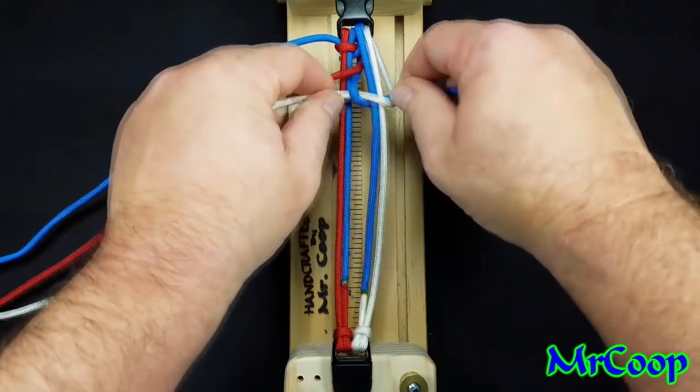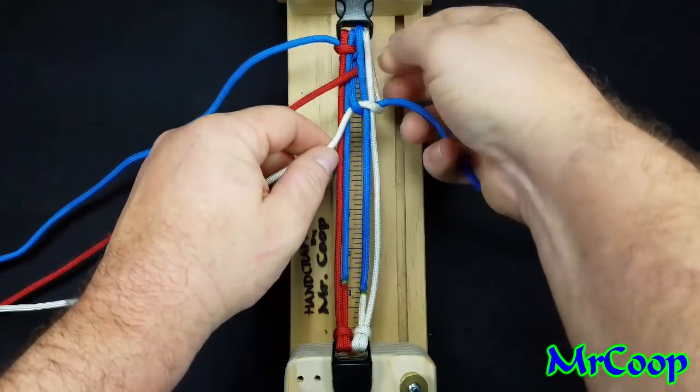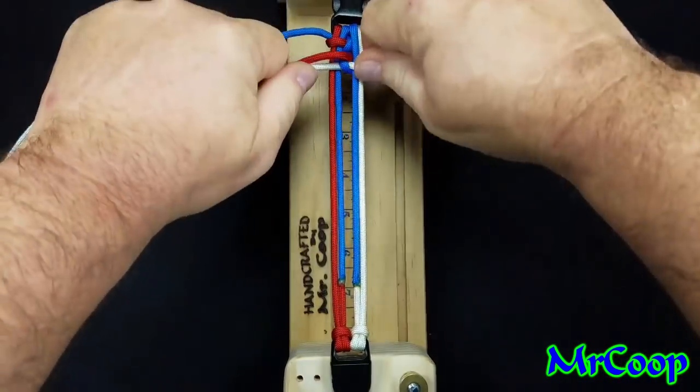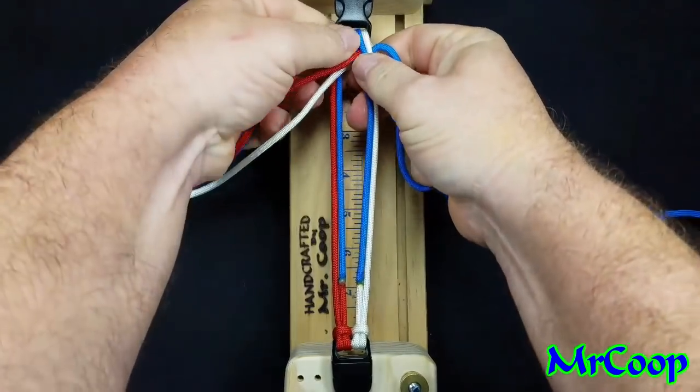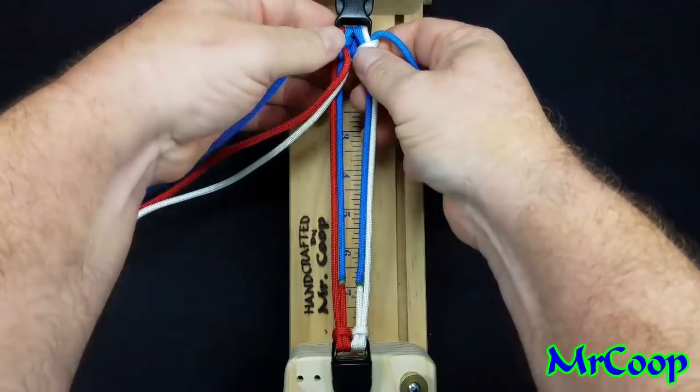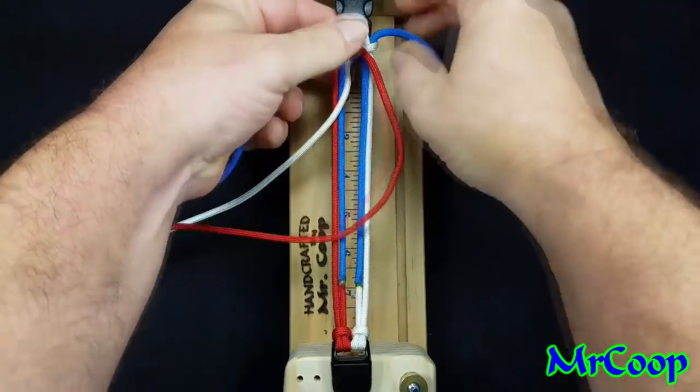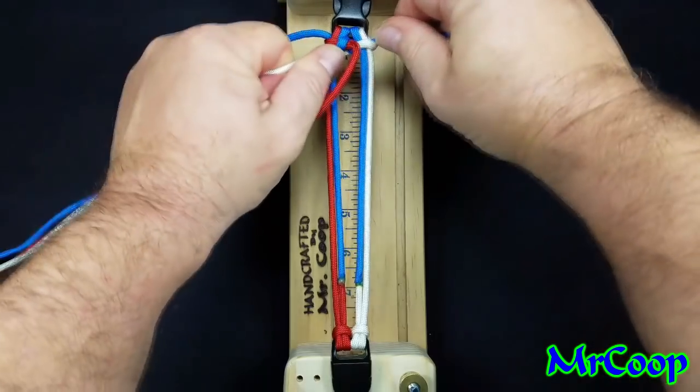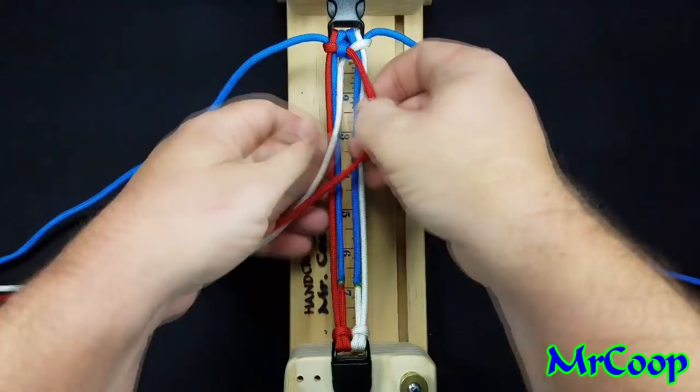And once again, we're going to pull down our cord, pull it all tight, and tighten her down. Work your knots up where everything should be. And that's how we're going to start it.